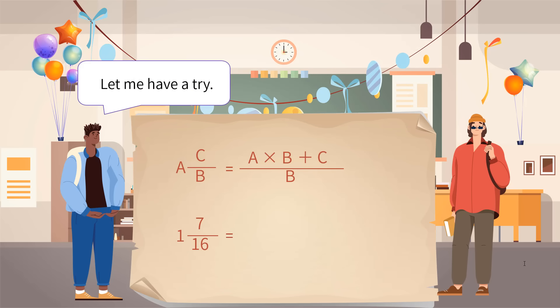Let me have a try. Keep the denominator the same. So, the denominator is still 16. Multiply the denominator 16 by the whole number part which is 1 and add the result to the numerator 7. The new numerator is 23. This fraction is 23 sixteenths. Is it right?